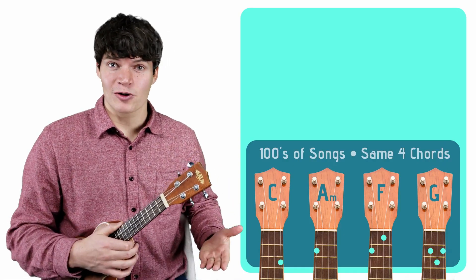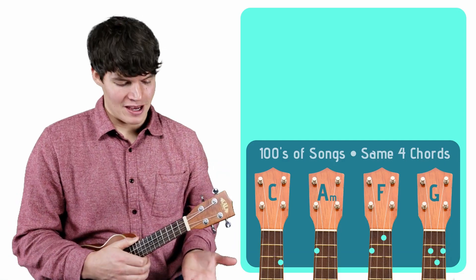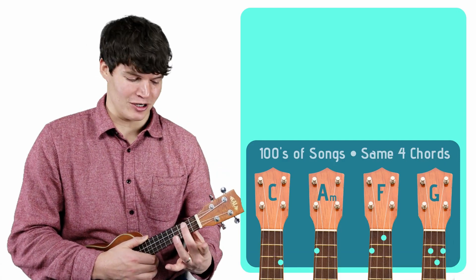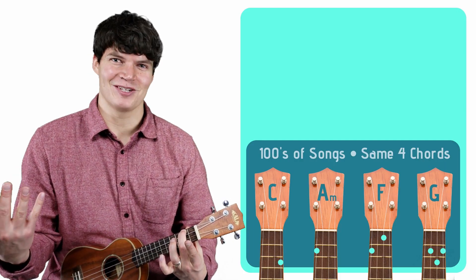The second chord, the A minor chord, is just as easy as the first one. You're just going to take your middle finger and place it on the second fret of the top string. Pretty easy, right?